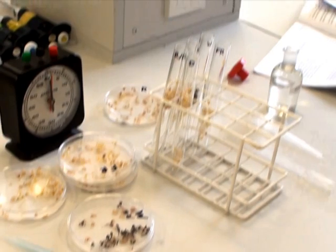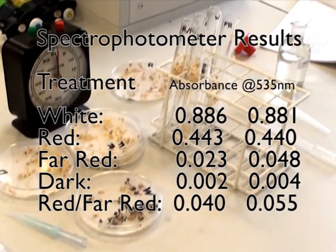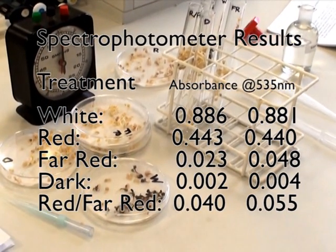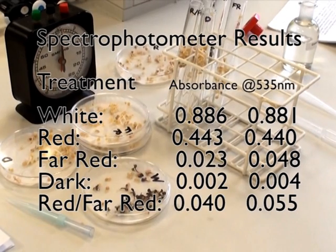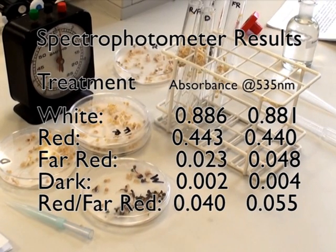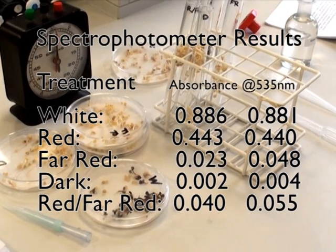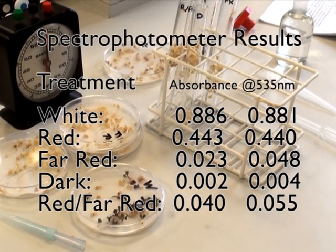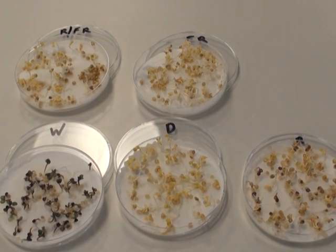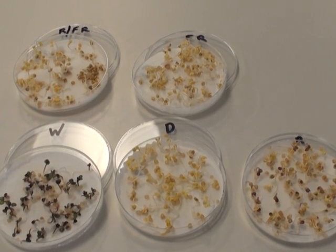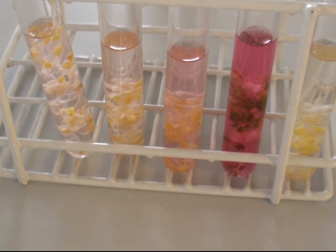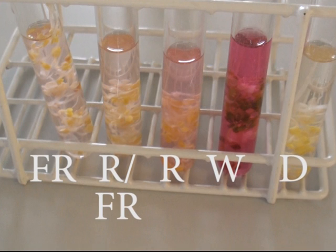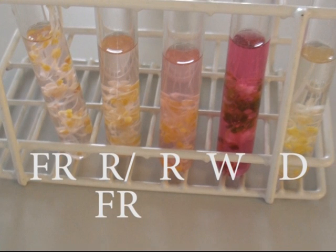These experiments are repeated two times for each one of the treatments with different lights and you can see that the white light gives the darkest red pigment with highest absorbance value. Whereas the red gives about half that and the dark and the red followed by far red treatments give very little production of the anthocyanin pigments. If we look at those, those results fit very well with what we see from the tubes themselves.